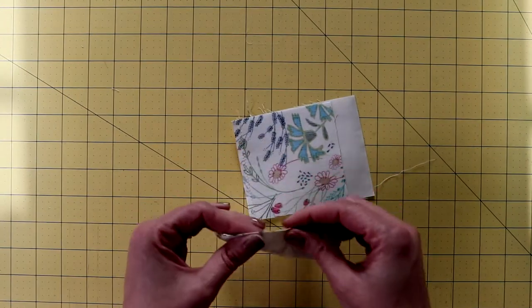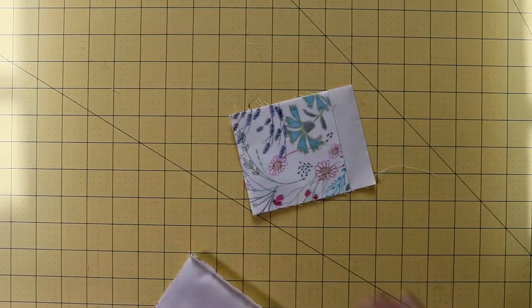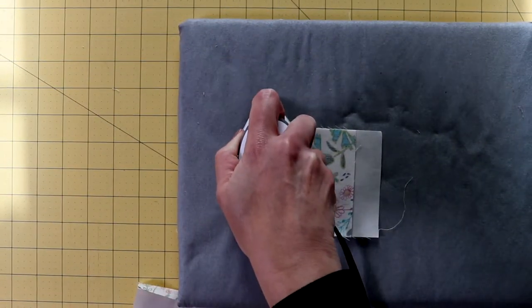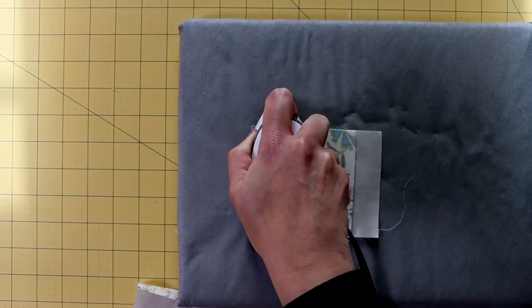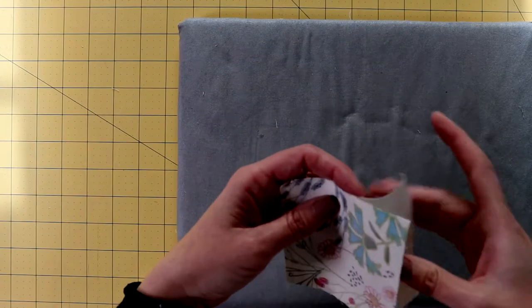An easy way to do that is I always take the iron first. I like to heat up the sewing line first. And then I'm going to flip it open.